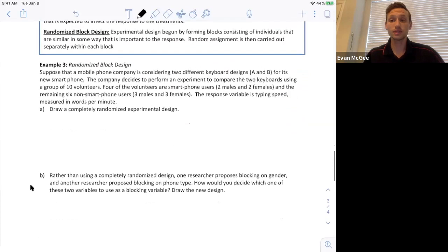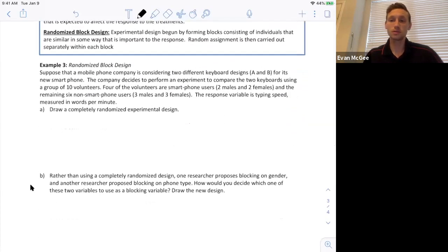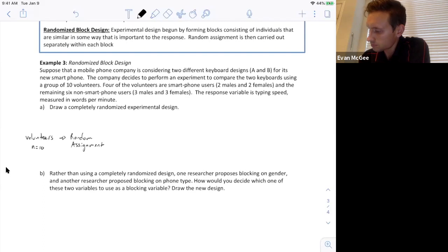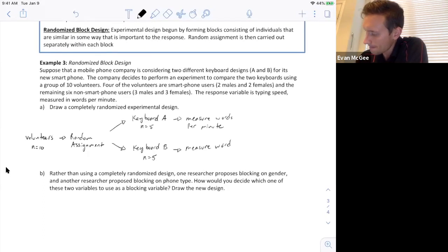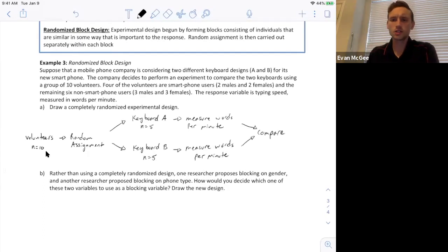So draw a completely randomized design. For a completely randomized design, all experimental units are randomly assigned to one of the two treatments keyboard A or keyboard B. Just like I've seen before, the 10 volunteers are randomly assigned to keyboard A, five of them and five to keyboard B. Then we measure the response, how many words per minute they typed, and then we compare the results.